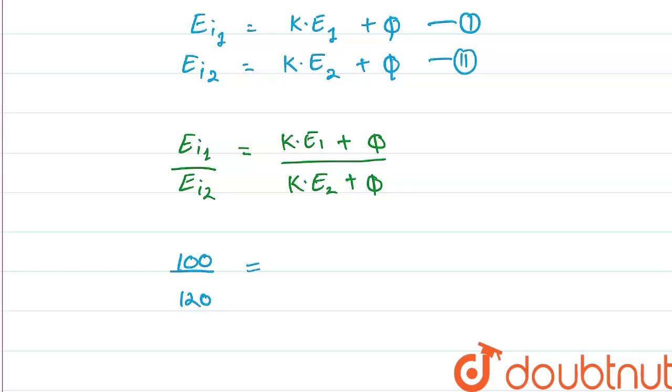Now this will be equal to kinetic energy in first case was 0.5 electron volt plus phi upon kinetic energy in second case, 0.8 electron volt plus phi.